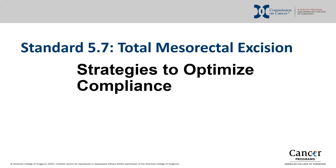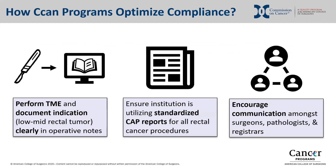Finally, we address some strategies to optimize compliance with standard 5.7. First, surgeons must dictate the indication for TME, including curative intent surgery for rectal cancers and their measure of performance of the TME specimen. Communication between the surgeon and the pathologist regarding standard 5.7 will help pathologists recognize that the TME specimen requires scoring, and assist registrars in encoding relevant information. We encourage each institution to discuss amongst surgeons, pathologists, and registrars how tumor location will be documented, as this will be key to registrars understanding to which cases this standard applies. The CSSP recommends that surgeons document low to mid-rectal tumor on the operative report for all of these operations.